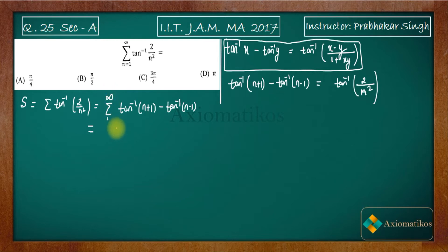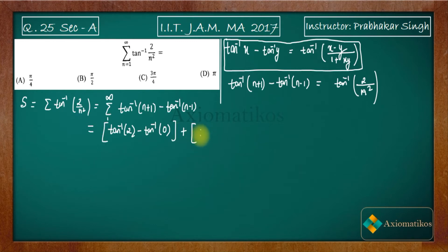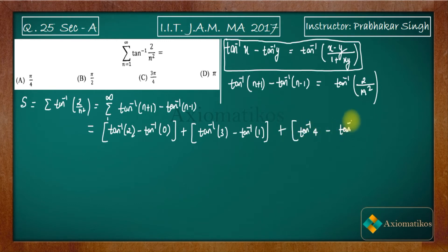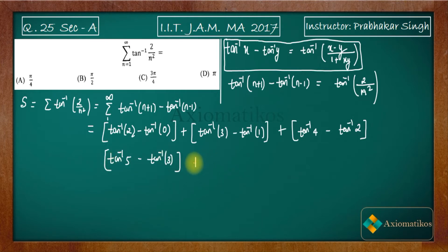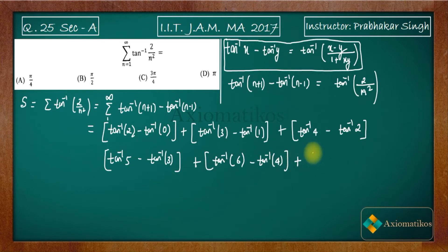Let us write out a few terms. For n = 1: tan⁻¹2 - tan⁻¹0. For n = 2: tan⁻¹3 - tan⁻¹1. For n = 3: tan⁻¹4 - tan⁻¹2. For n = 4: tan⁻¹5 - tan⁻¹3. For n = 5: tan⁻¹6 - tan⁻¹4.